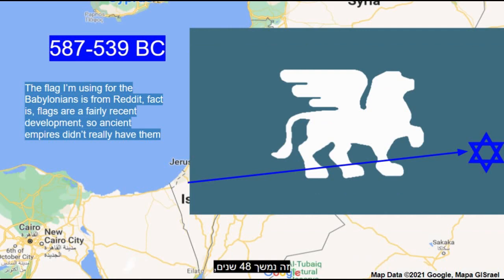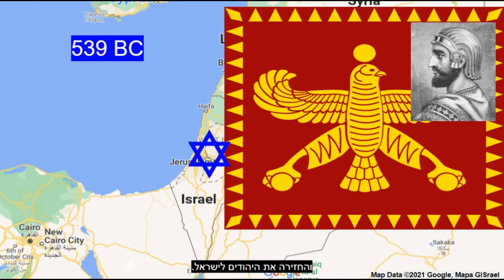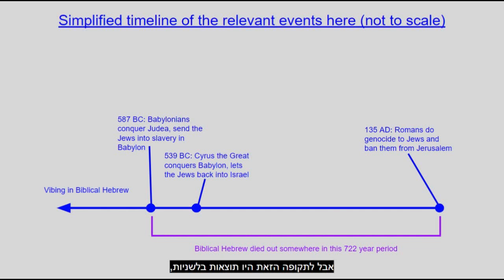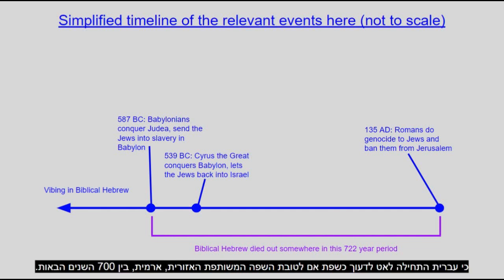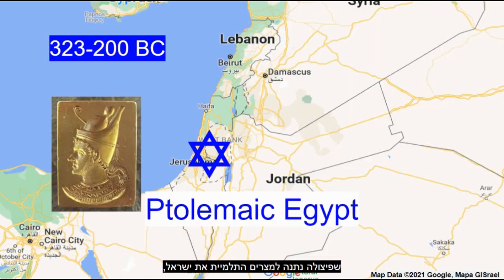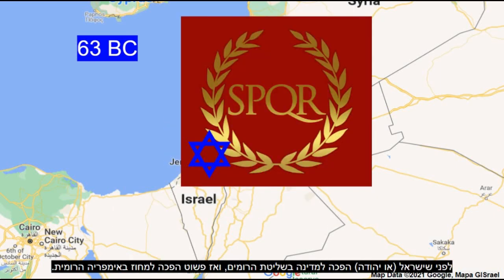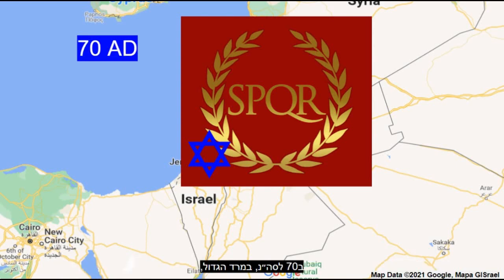This lasted 48 years because in 539 BC, the Achaemenid Persian Empire, led by Cyrus the Great, took over Babylon and sent the Jews back to Israel. This period had linguistic consequences, as Hebrew began gradually dying out as a native language in favor of the regional lingua franca, Aramaic, over the next 700 years or so. In these 700 years, there was the Persian Empire, followed by Alexander the Great's Hellenic League, the split of which gave Israel to Ptolemaic Egypt, then the Seleucid Empire — still Greek — followed by a brief 103 years of independence in the Hasmonean dynasty, before Israel or Judea became a Roman puppet state and then part of the Roman Empire.